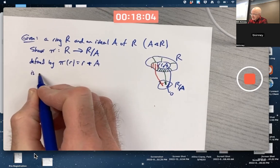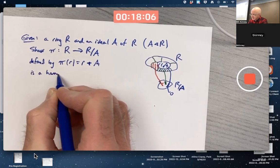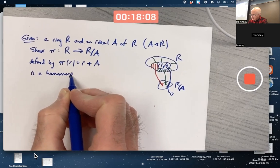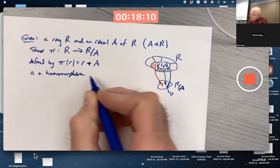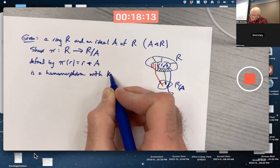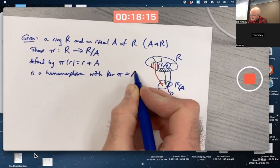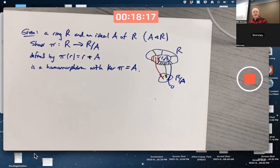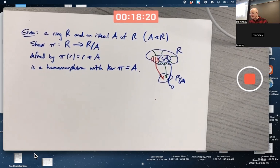Show that this is a homomorphism, a ring homomorphism, with the kernel equal to A itself. That's the goal. So the point of this is that ideals and kernels are basically equivalent ideas. That's almost a pun. Ideas, ideals? Almost a pun. Ideals and kernels are almost the same idea. They're almost the same concept.